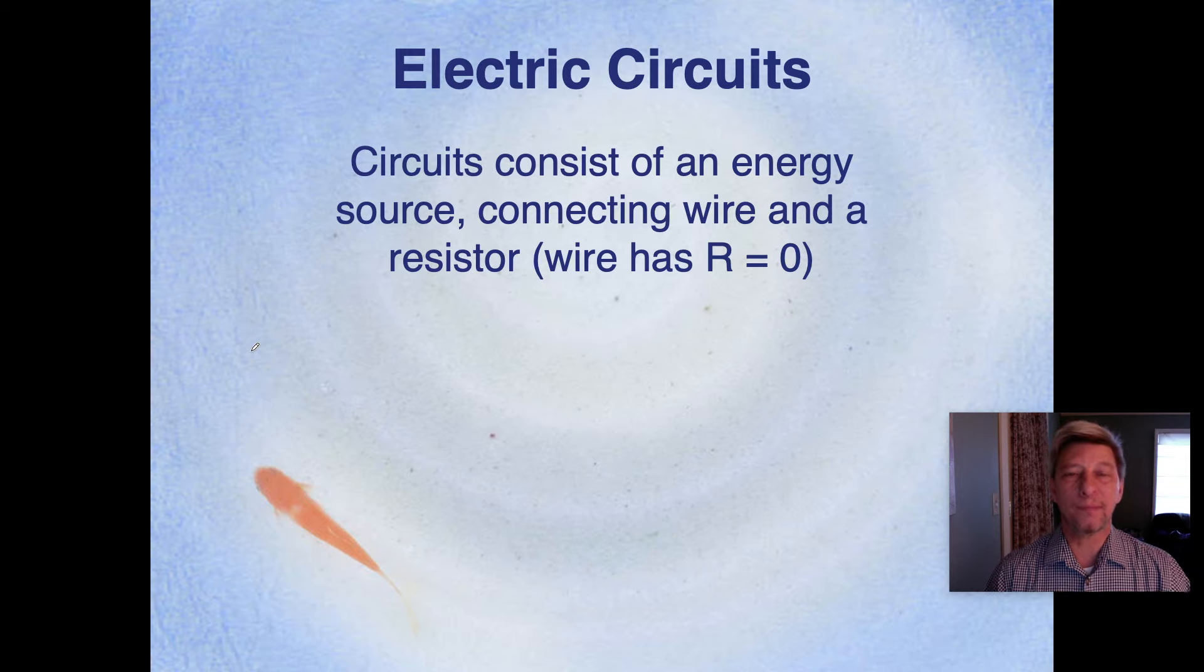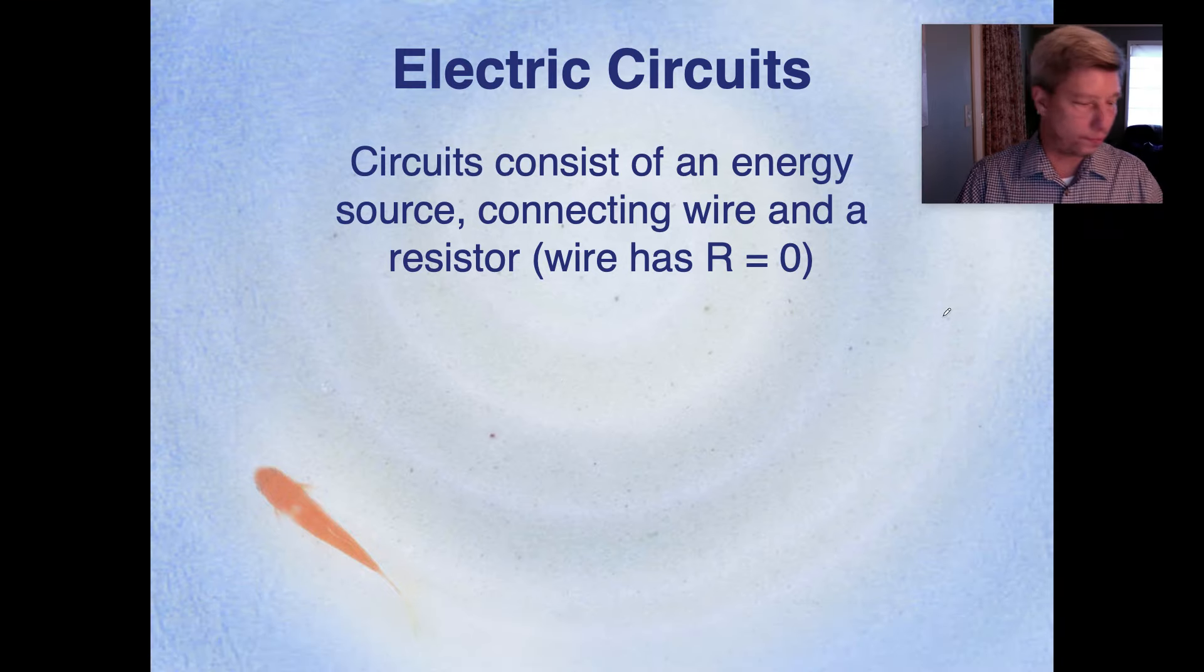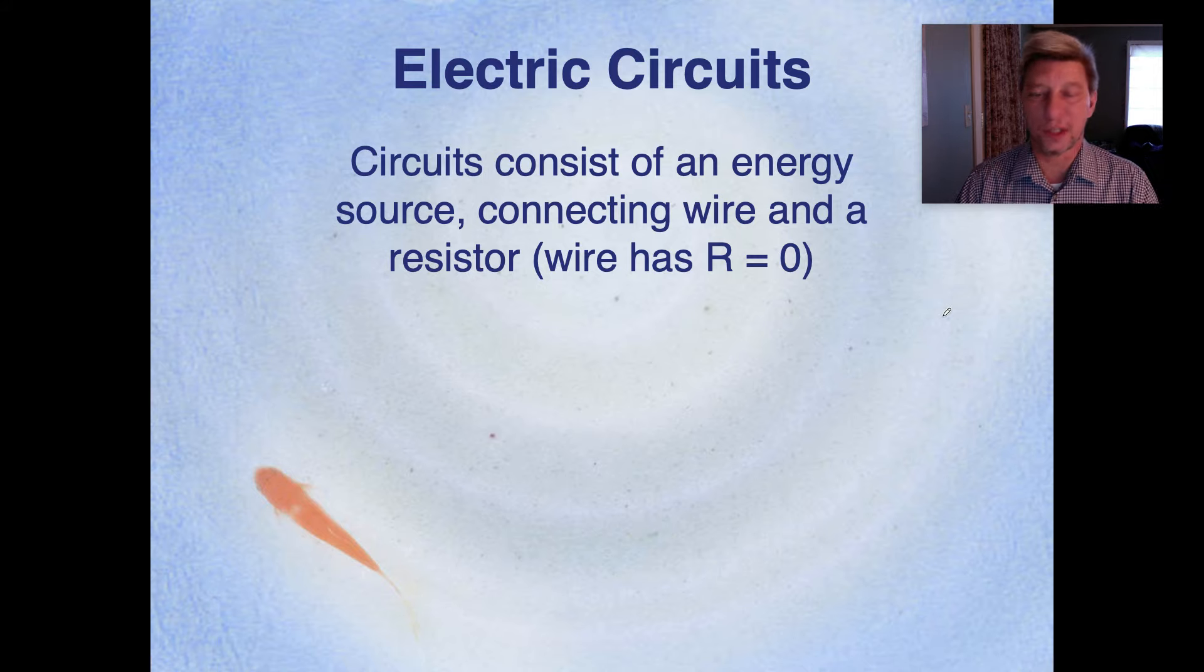So what is an electric circuit? A circuit consists of an energy source, a connecting wire, and a resistor. And we're going to assume that the wire itself has a total resistance of zero ohms.